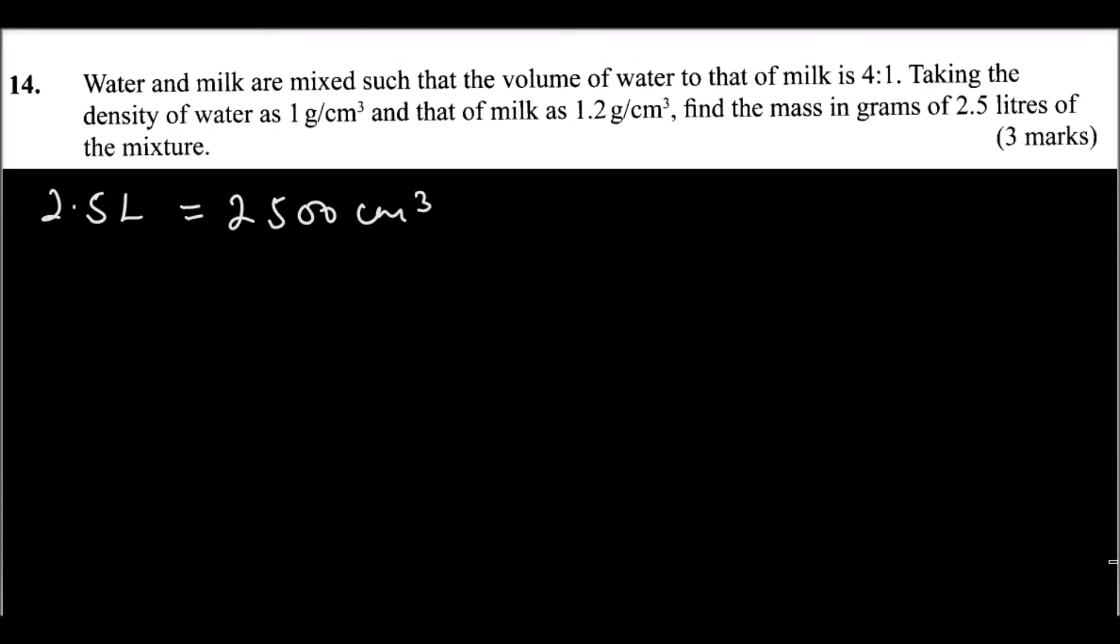Now, because the ratio of water to milk is 4 is to 1, then to get volume of water is equal to 4 parts out of 5 multiplied by 2,500 centimeter cube. And that should give you, you can use your calculator, you will be able to get that. Those are 2,000 centimeter cube.